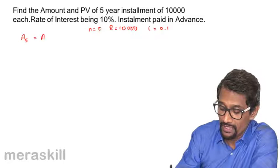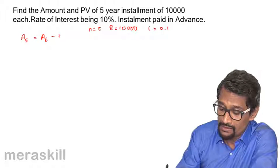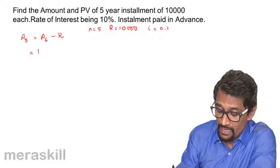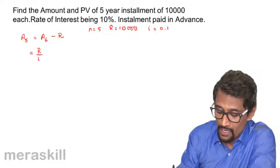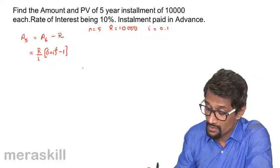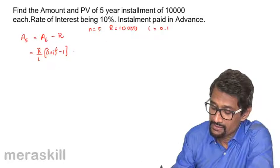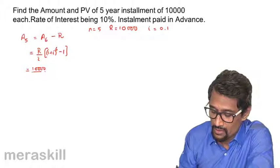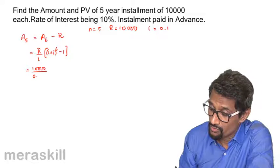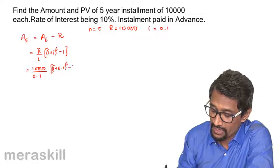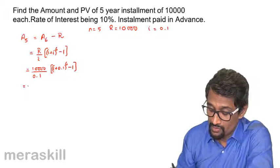a5 is going to be a6 minus R. So we calculate a6, which is going to be R upon i into (1 plus i) raised to 6 minus 1. So we calculate as 10,000 upon 0.1 into (1 plus 0.1) raised to 6, minus 1.